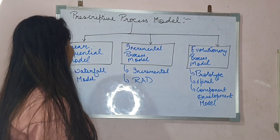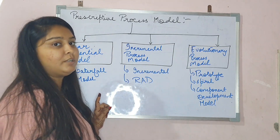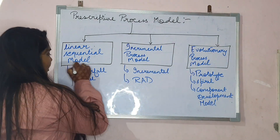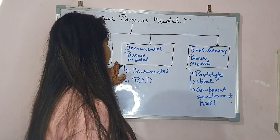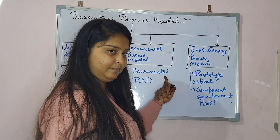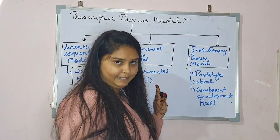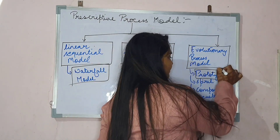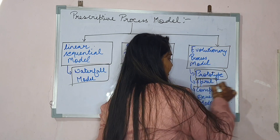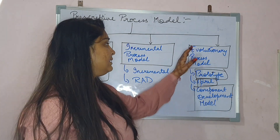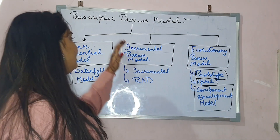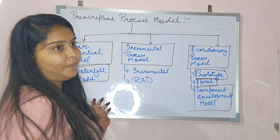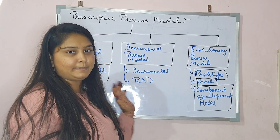In the linear sequential process model, the example is the waterfall model. In the incremental process model, there is the incremental process model itself and also RAD. In the evolutionary process model, there are three examples: prototype, spiral, and the component development model. These are the types under each category.